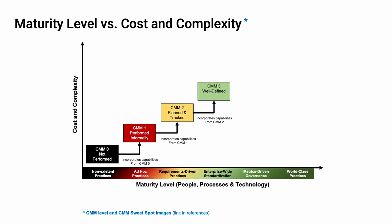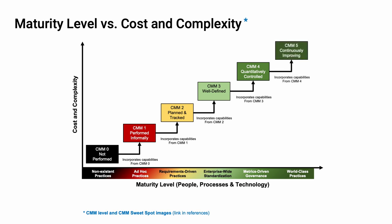An organization that has level 3 processes is applying them consistently across the organization — it's no longer just a single team or group using them; the process is used in a consistent manner across all products. At CMM level 4, cybersecurity activities are being quantitatively controlled, with consistent process usage across the organization, planned, tracked, and driven by requirements, and metrics are used to refine and update the processes. A CMM level 5 process undergoes continuous improvement — it's being tracked, well-defined, planned, and metrics keep things up to date. This is an absolutely best-in-class process.